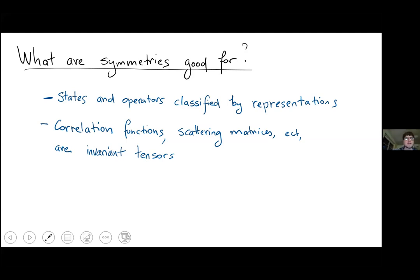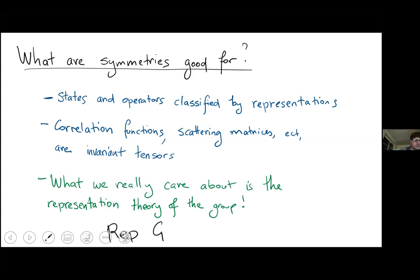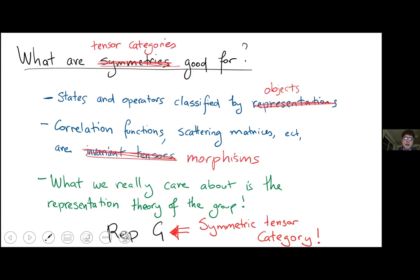First, states and operators are classified by representations of the symmetry group — so the group tells us exactly what operators are allowed to exist. Second, correlation functions, scattering matrices, or any other physical observable must be invariant tensors, whose structure is determined by the representations appearing in the correlator. What we really care about is the representation theory of the group — its representations and invariant tensors — which mathematicians encode in Rep(G), a symmetric tensor category.